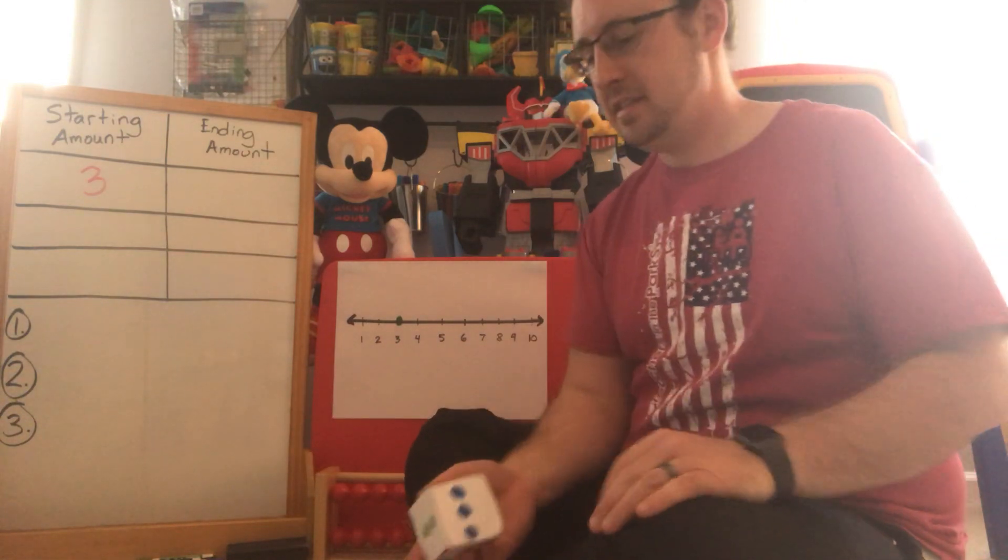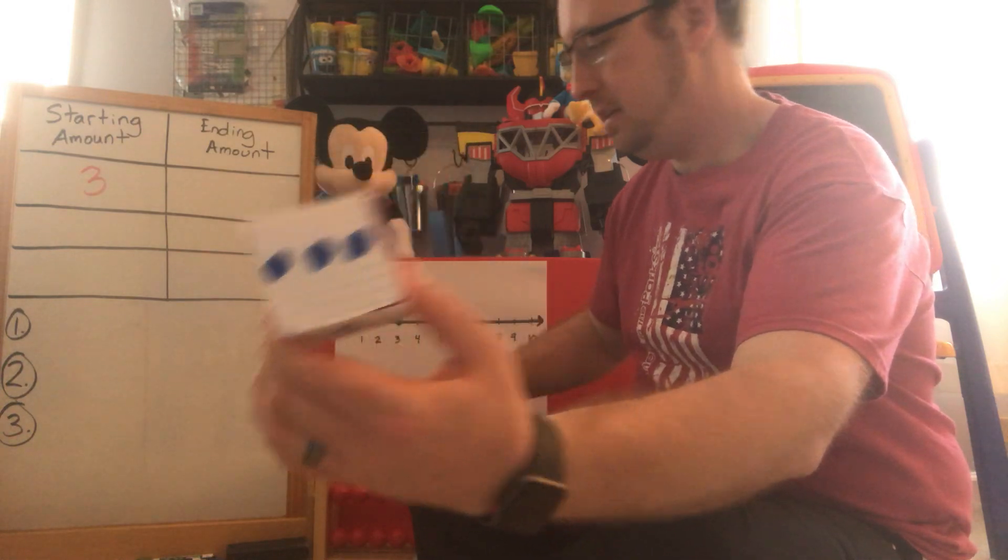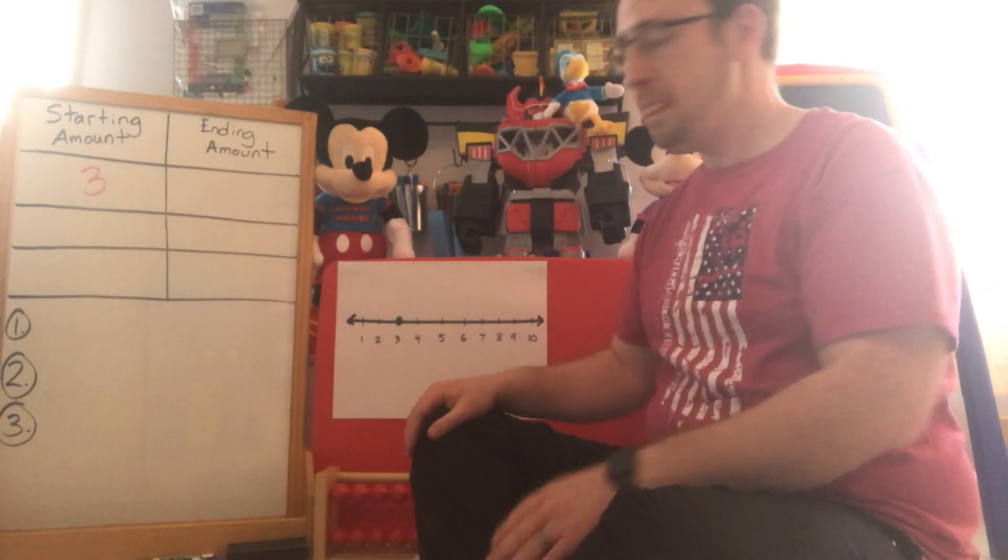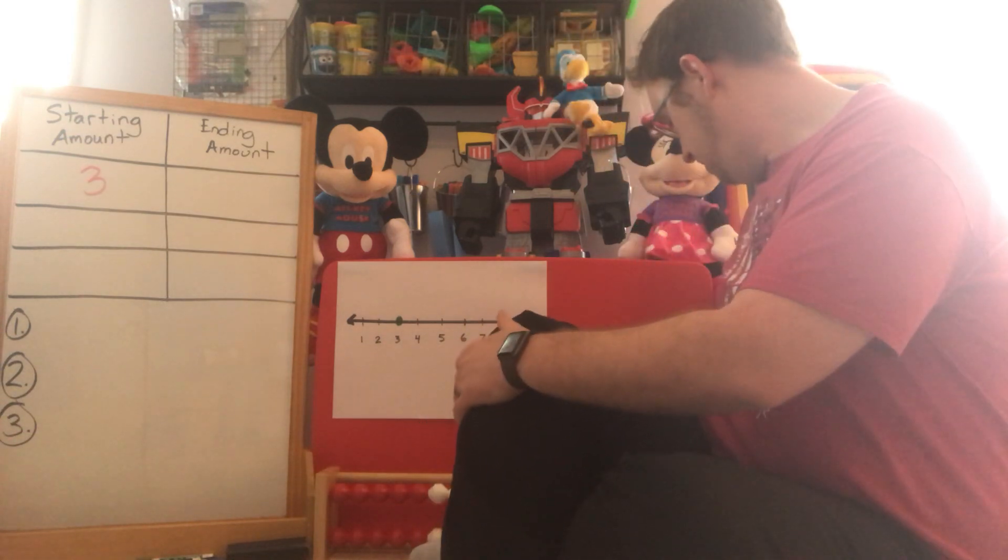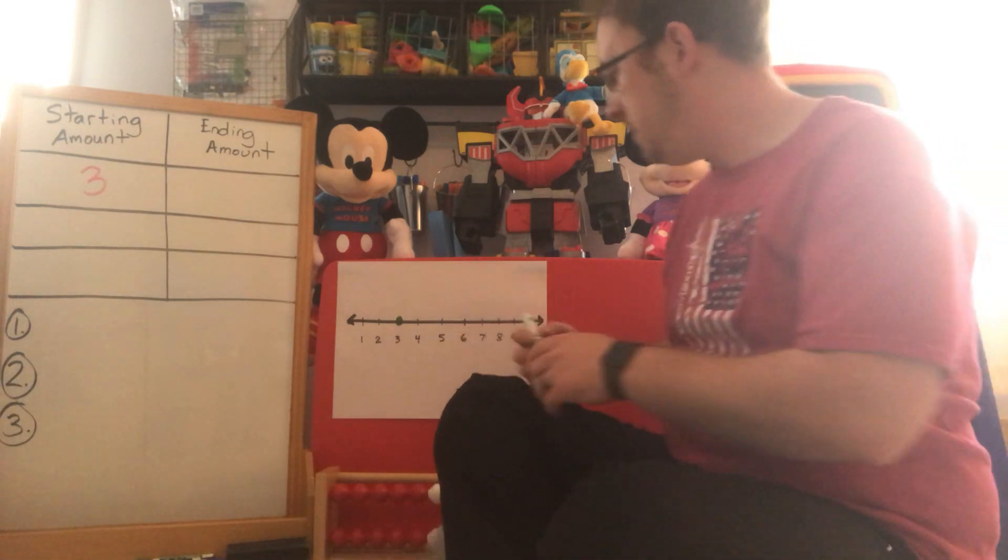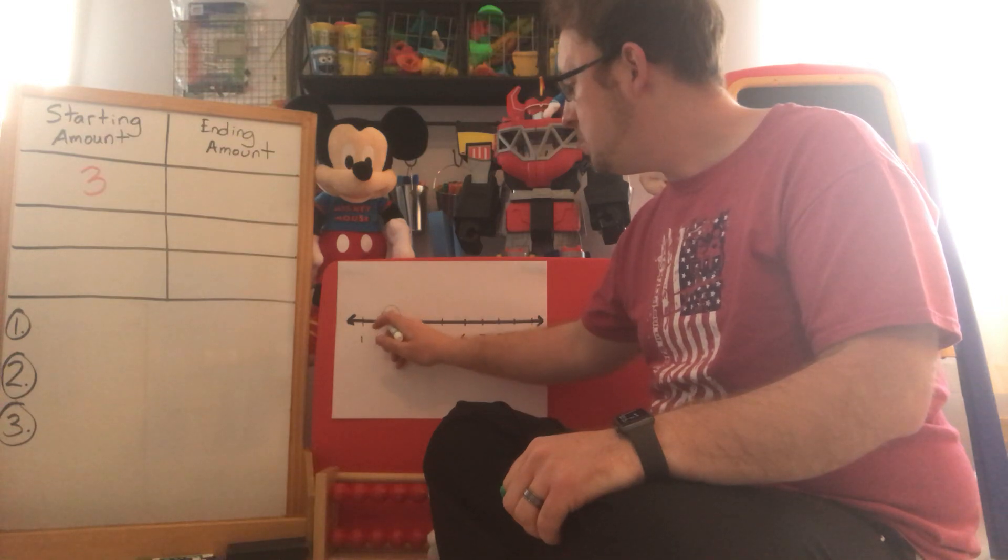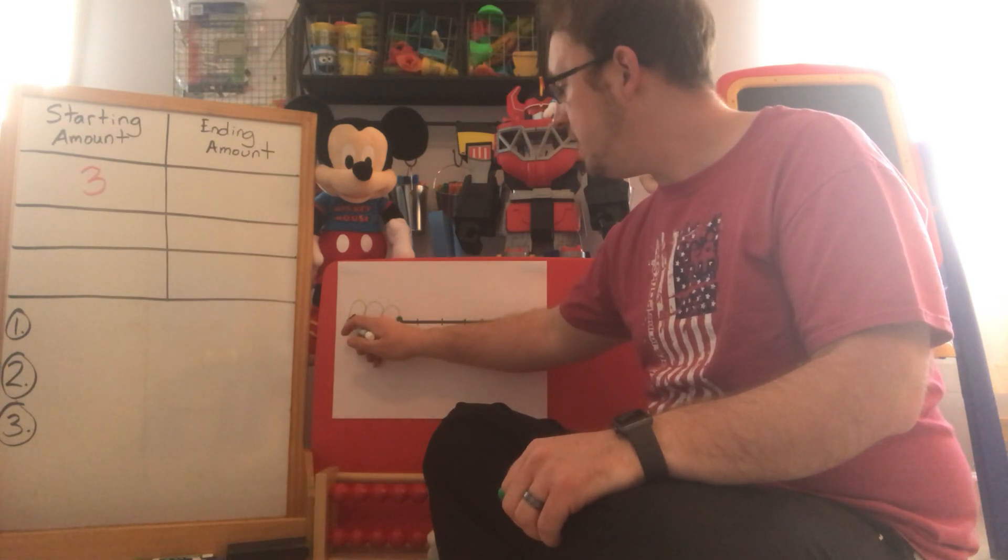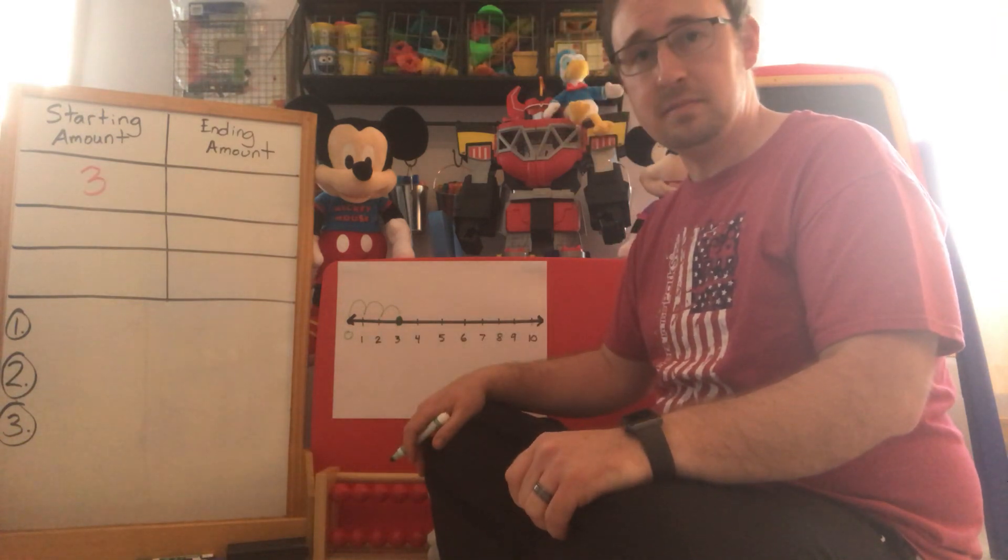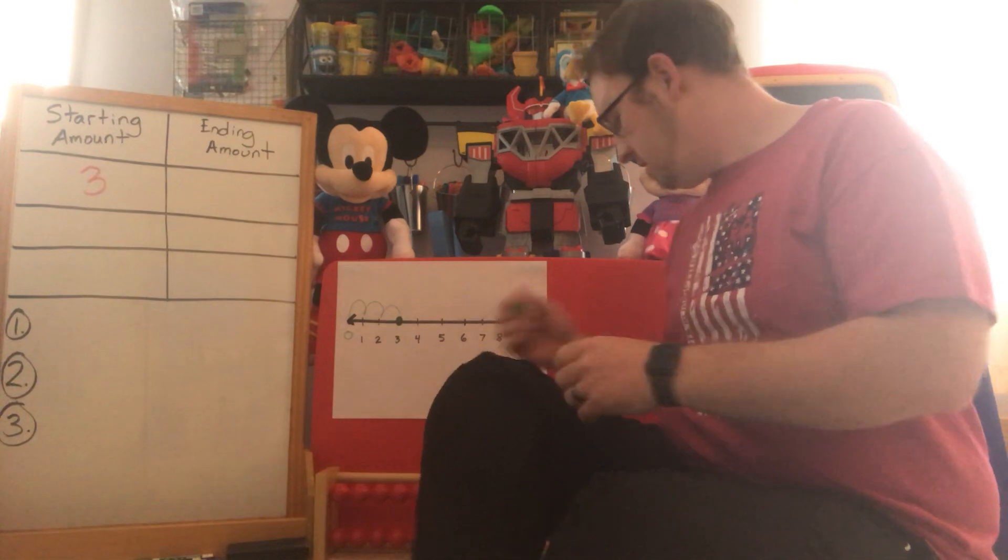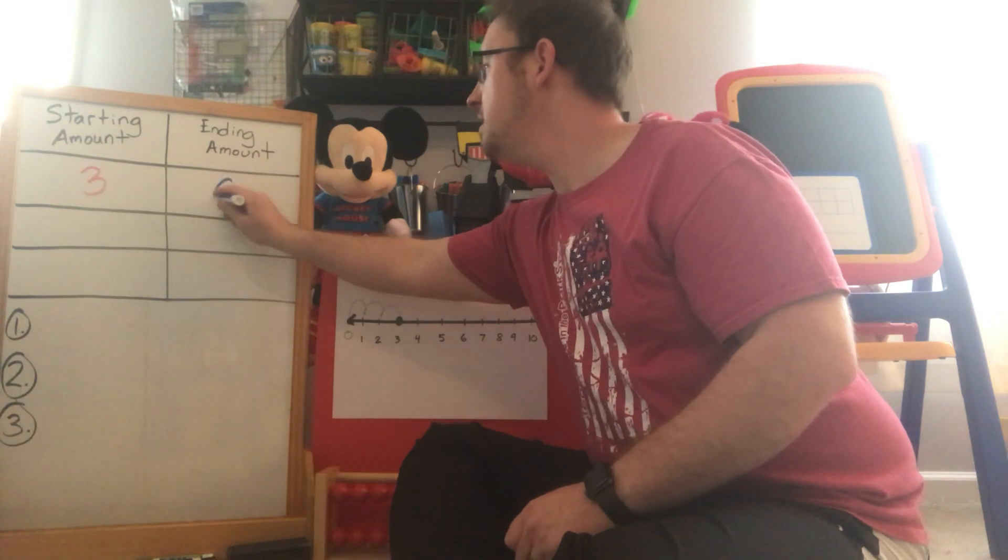Alright next move is to roll the dice. I'm gonna roll my dice. Okay I rolled a three. Okay so what I'm gonna do is I'm going to remove three. So on my number line I'm gonna count back three spaces. One, two, three. It took me to the end of my number line. I landed on zero. Okay so our ending number, our ending amount on our recording sheet for this example will be zero because I ended on zero.